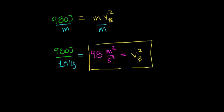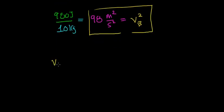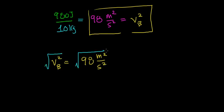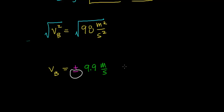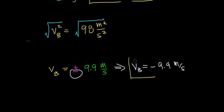The next step is to take the square root of both sides to find the velocity. The velocity of the rock squared equals 98 meters squared per second squared, so taking the square root of both sides gives the velocity of the rock at point B equals plus or minus the square root of 98, which works out to 9.9 meters per second. Now we need to take into account the direction — the rock is traveling downward, so the velocity at point B is negative 9.9 meters per second, because it's traveling in the negative y direction.